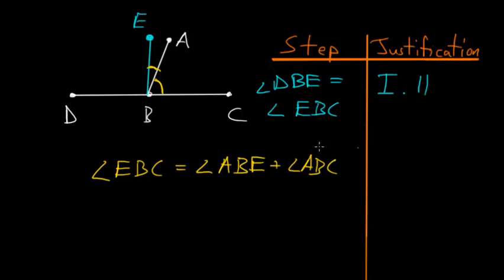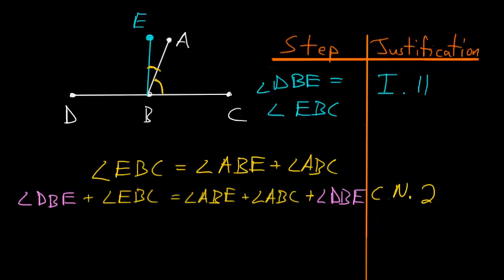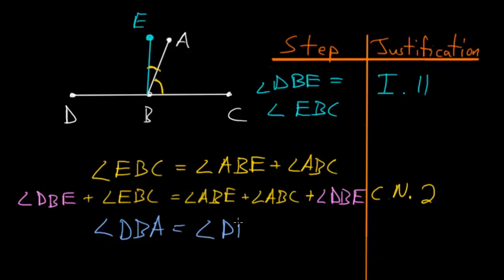So angle EBC is equal to angle ABE plus angle ABC. We can use Common Notion 2, which says that if we add equals to equals then the wholes will be equal. In this case we add angle DBE to each side. Now we can also see that angle DBA is composed of two separate angles: DBE and ABE. So DBA is equal to angle DBE plus angle ABE.